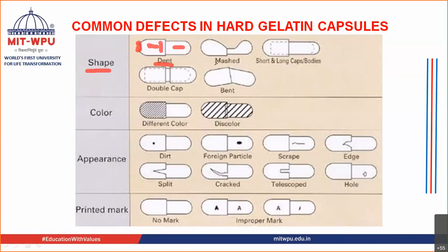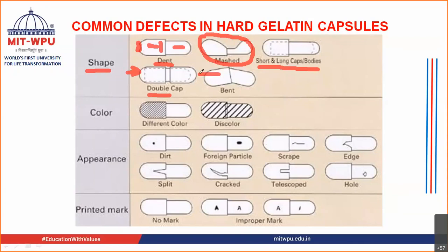You can see capsules that are mashed — totally squeezed. Then you can see capsules with short and long caps and bodies — the body is too long or the cap is too short, or the body is too short and the cap is too long. The next defect is the double cap, where you have a cap from the top side as well as from the bottom side. You can also see the bend, where the capsule gets bent instead of being straight.